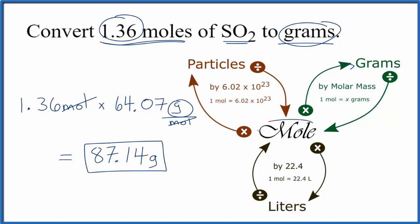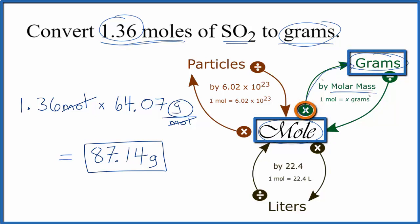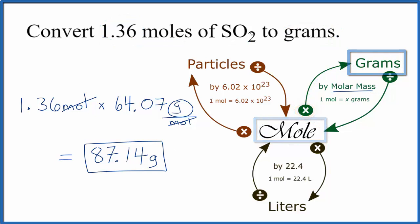So to recap, we had moles and we wanted to get to grams, so we multiplied by the molar mass. If we were given grams of SO2 and asked to convert that to moles, we'd just do the opposite. We have our grams, we divide by the molar mass, and that would give us moles.